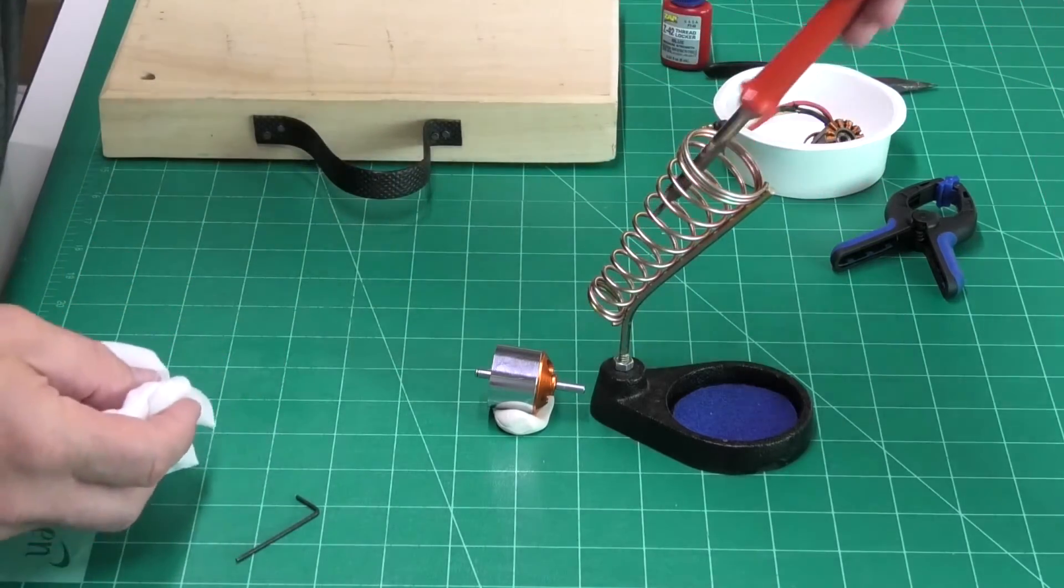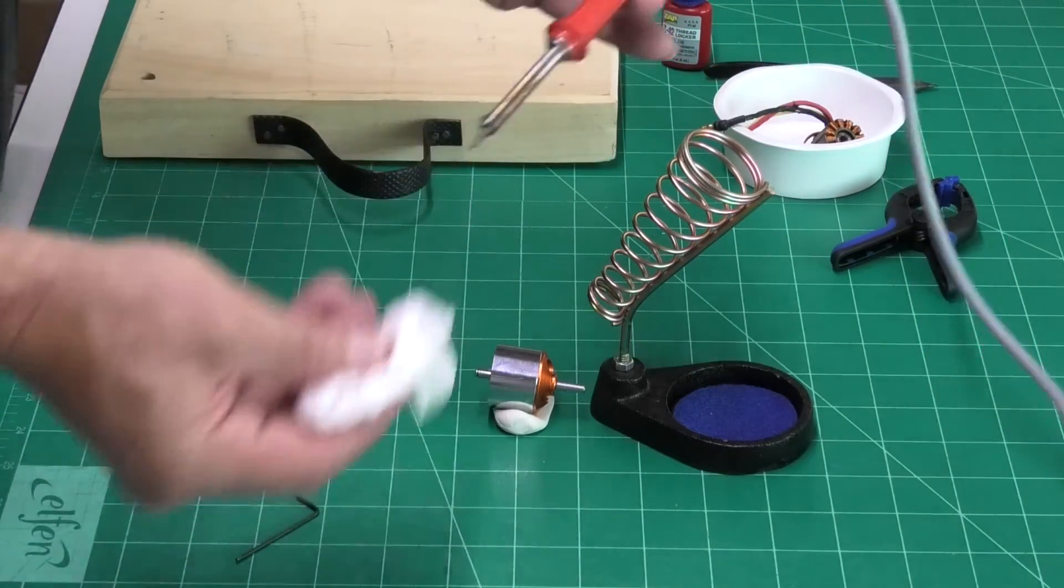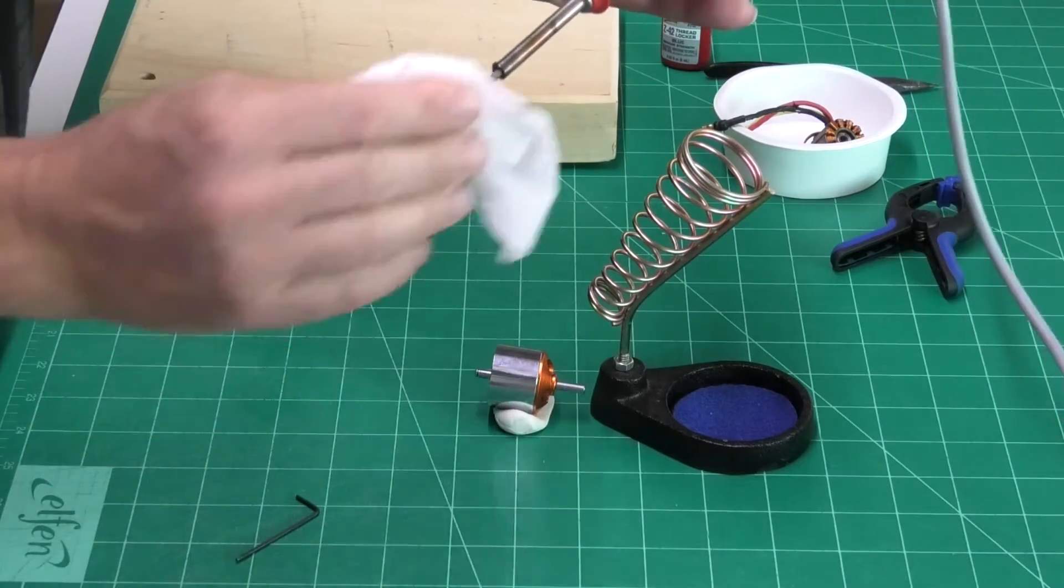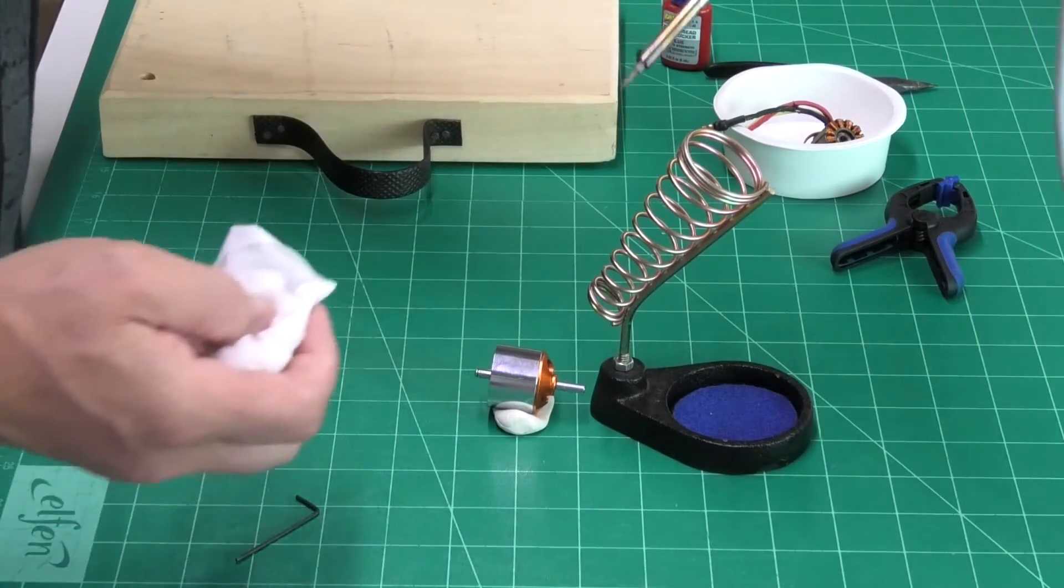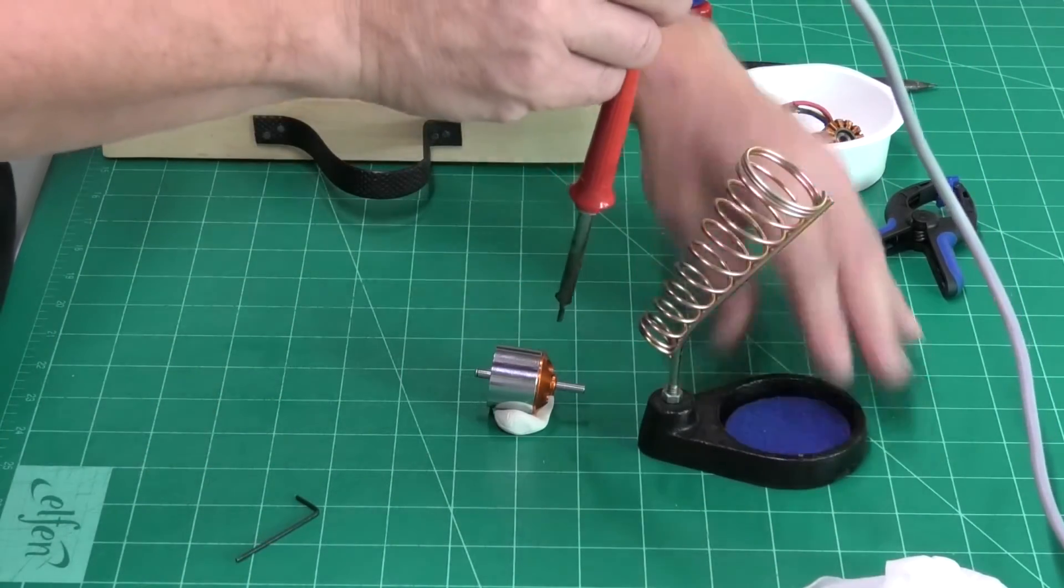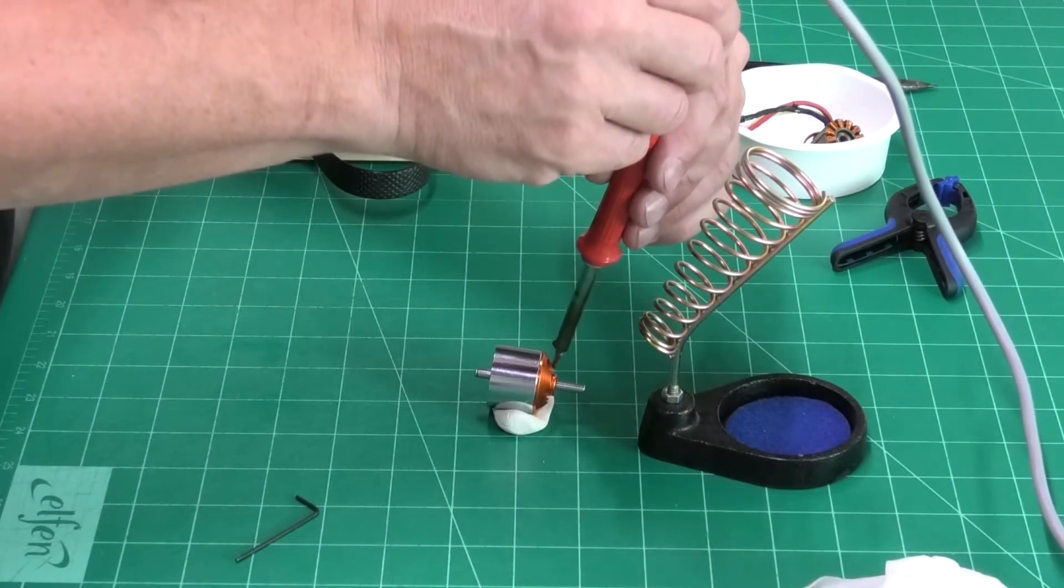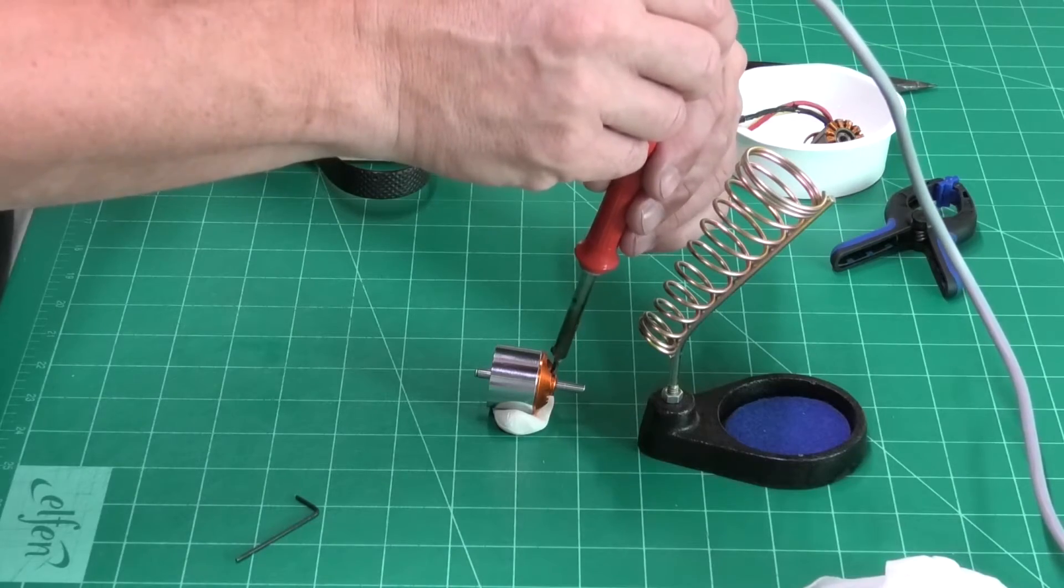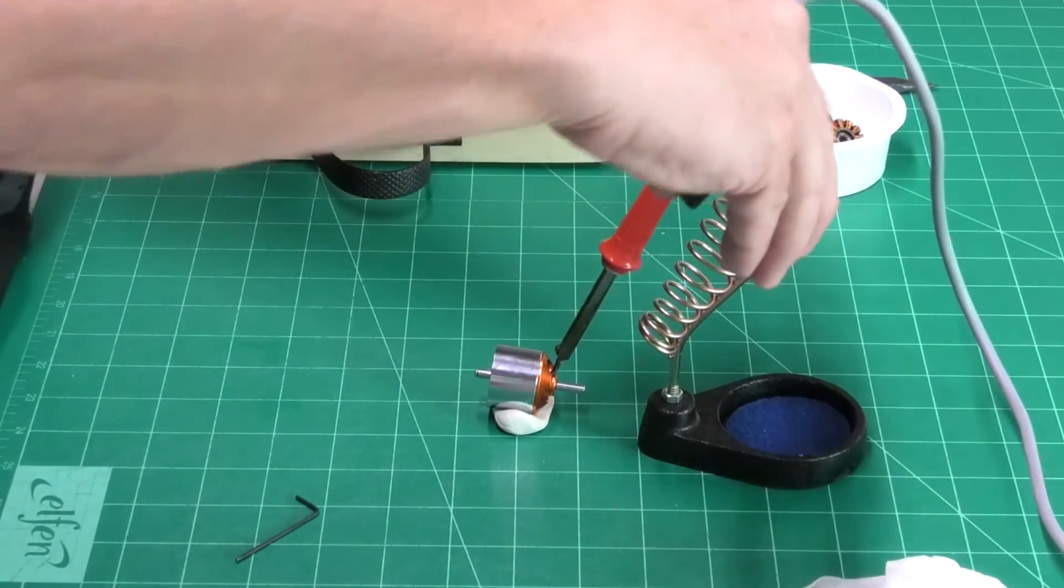So, we'll just wait a minute for that to heat up. Okay, we have a nice hot soldering iron now, giving it a minute or two to heat up. Just going to give that a wipe, make sure it's nice and clean. And I'm going to balance this onto that grub screw. Just hold it in place with a clip.